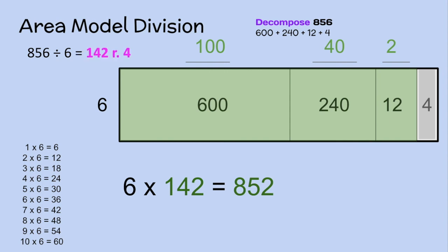Remember, we were trying to solve what are we going to multiply times 6 to get 856, but we know 142 times 6 will get us 852, but we still got 4 left over. So if we add that 4 to 852, that'll get us to 856.